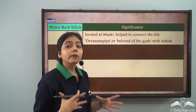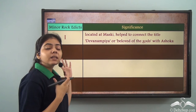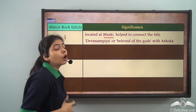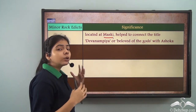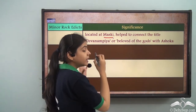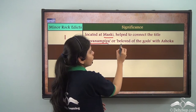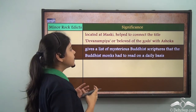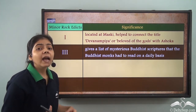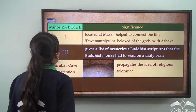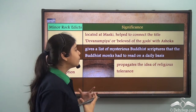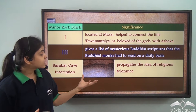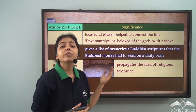The minor rock edict 1, located at Maski, helps us connect that the title Devanampiya — meaning 'beloved of the gods' — was assumed by Ashoka. Before this edict, we did not know that Devanampiya referred to Ashoka himself. The minor rock edict 3 gives us a list of Buddhist scriptures that Buddhist monks had to read on a daily basis. The Barabar cave inscription helped us understand the propagation of the idea of religious tolerance.